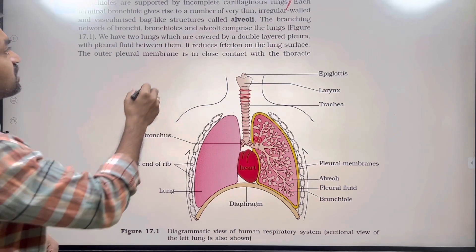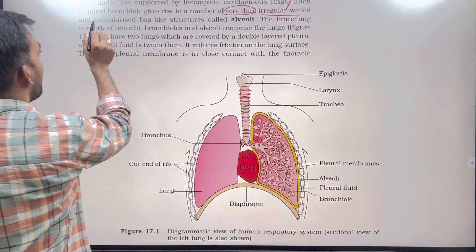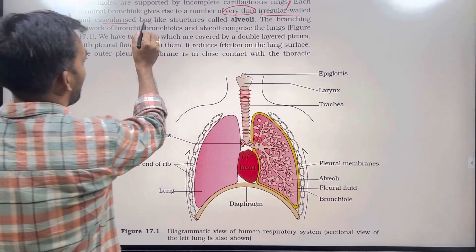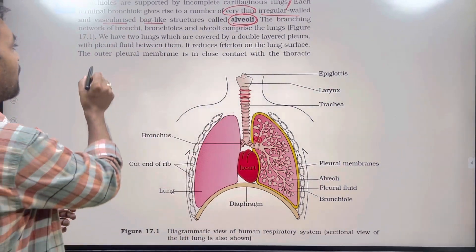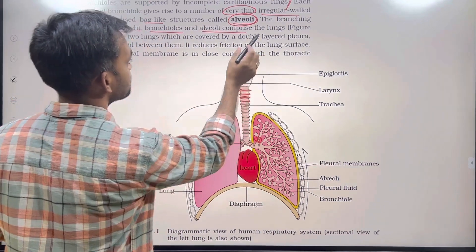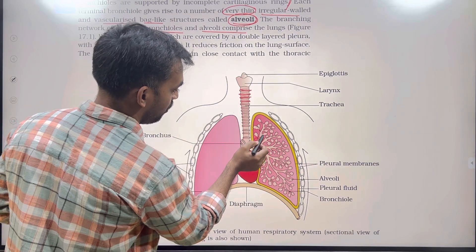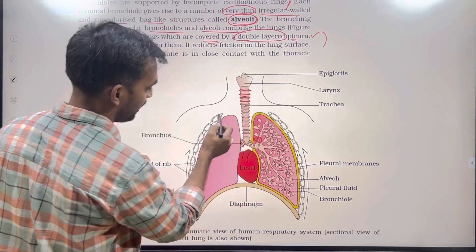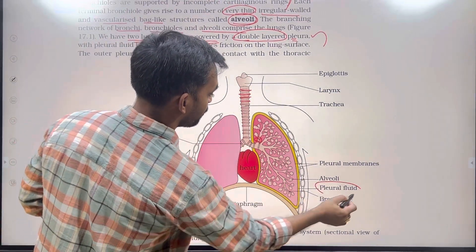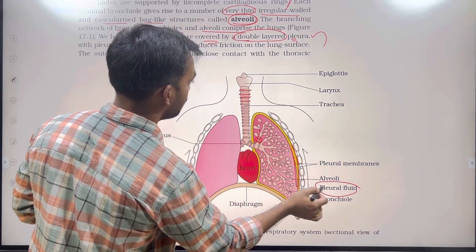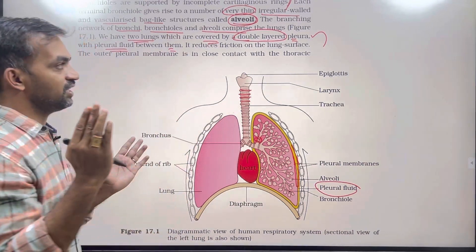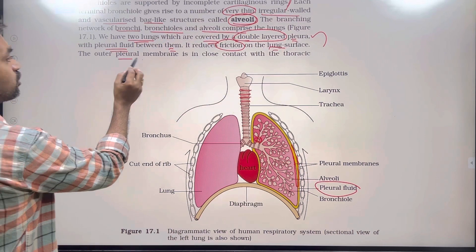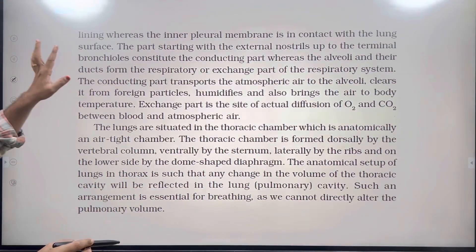Each terminal bronchiole gives rise to a number of very thin, irregular, vascularized bag-like structures called alveoli. The branching network of bronchi, bronchioles, and alveoli comprise the lungs. We have two lungs which are covered by a double-layered pleural membrane with pleural fluid between them. The outer pleural membrane is in close contact with the thoracic lining, whereas the inner pleural membrane is in close contact with the lung surface.